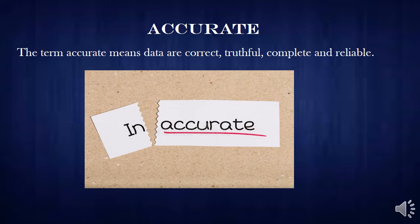A in ALCOA+ stands for Accurate. The term accurate means the data is correct, truthful, complete, and reliable.